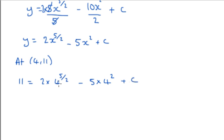4^(5/2) is 2^5, which is 32. So we've got 2 × 32, which is 64.